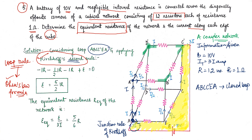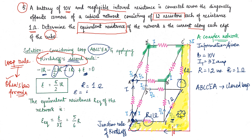Current flows out from the positive terminal, so E is positive. Then across the first resistor of 1 ohm, current i gives a drop of −iR. Across the next 1 ohm resistor, current i/2 gives a drop of −(i/2)R. Then across another 1 ohm resistor, current i gives −iR. Solving this equation from Kirchhoff's second rule, we get E = (5/2) × i × R, and since R = 1 ohm, E = 5i/2.